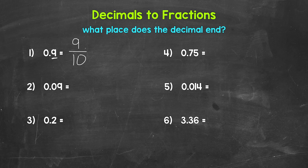Let's move on to number two, where we have 0.09, so nine hundredths. This looks similar to number one — we have a nine on the right side of the decimal, but that decimal ends in the hundredths place, so our denominator is going to be 100. So 9 over 100, nine hundredths. The only common factor between 9 and 100 is 1, so this is in simplest form.